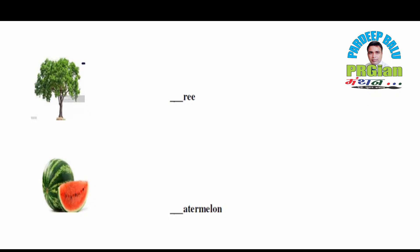Write a letter to complete the word. What do you see in the picture? Tree. So what will the spelling be? Here it is given as _ R E E. What will the spelling be? T R E E — Tree.